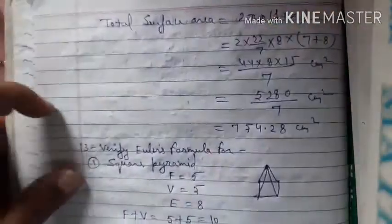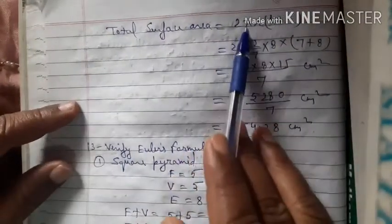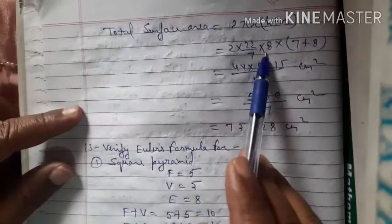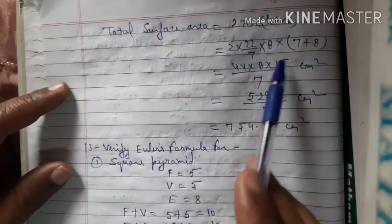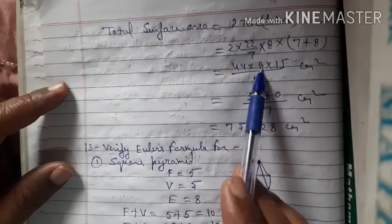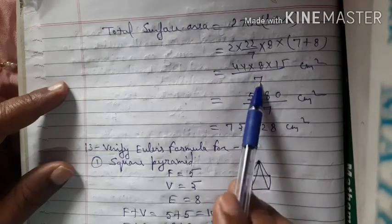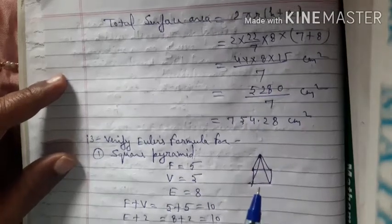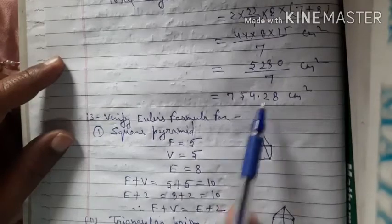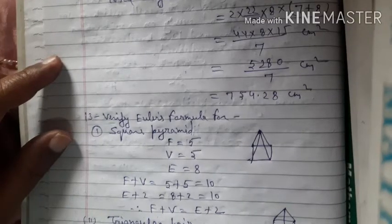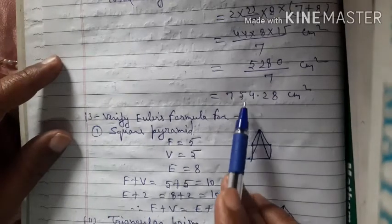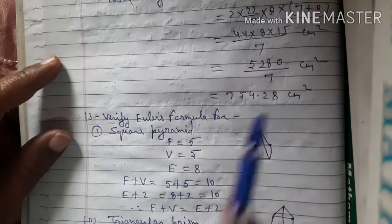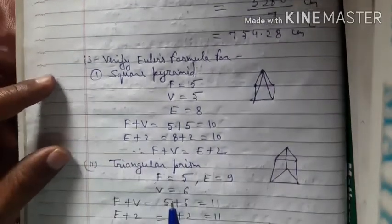Total surface area = 2πr(h + r) = 2 × (22/7) × 8 × (7 + 8) = 44 × 8 × 15 / 7 = 5280/7 cm square = 754.28 cm square. This is your answer.